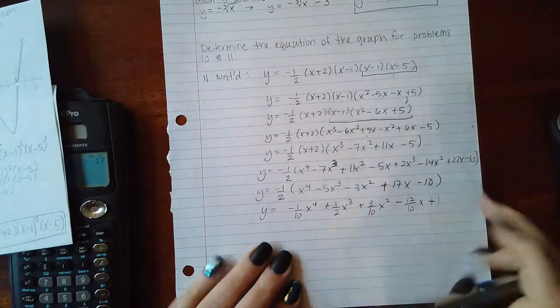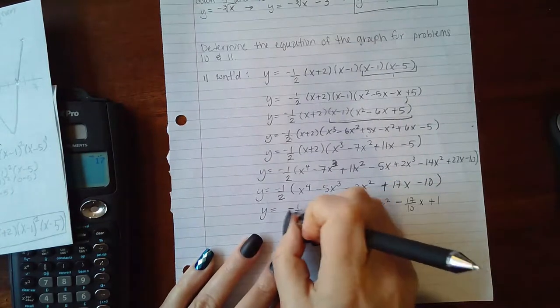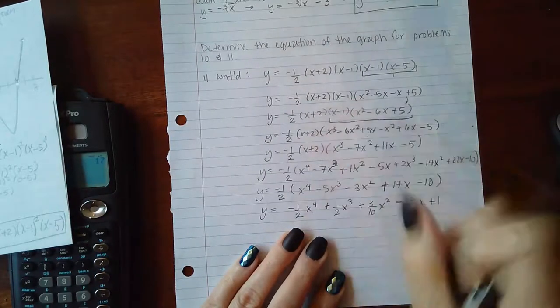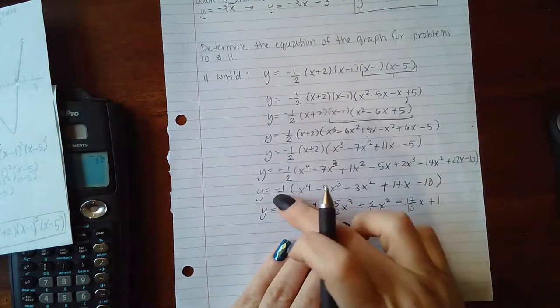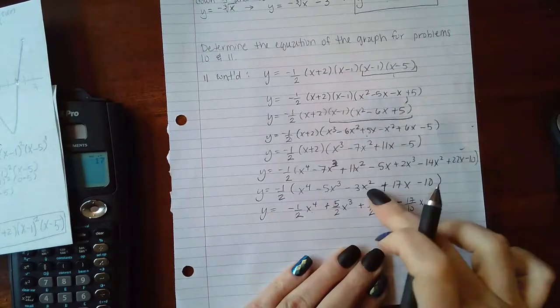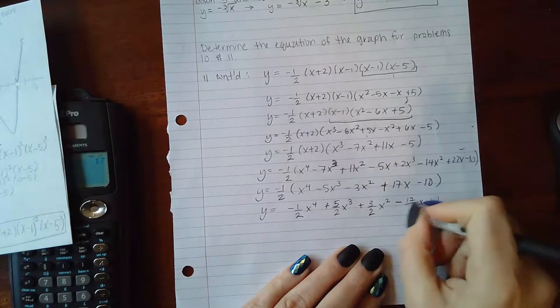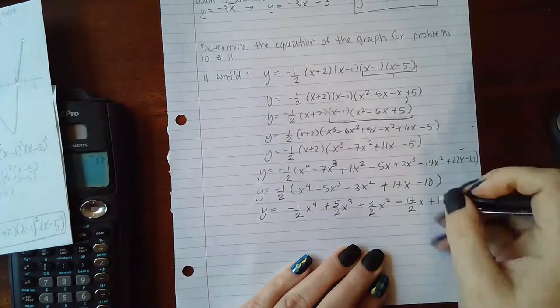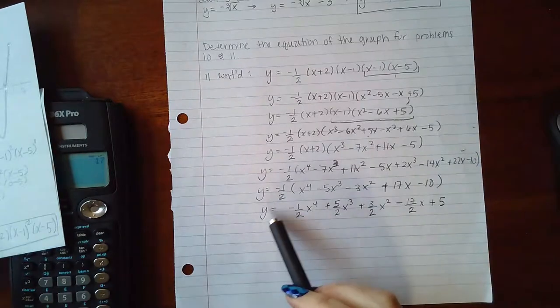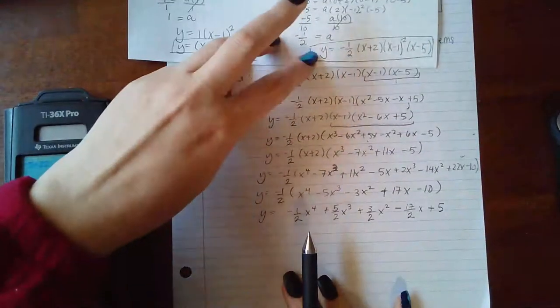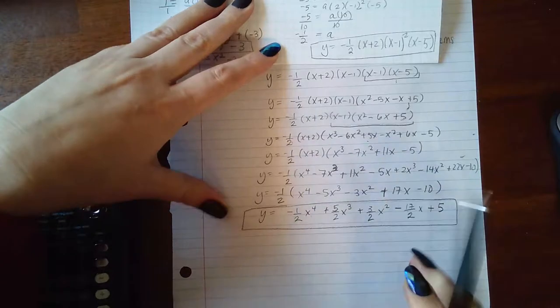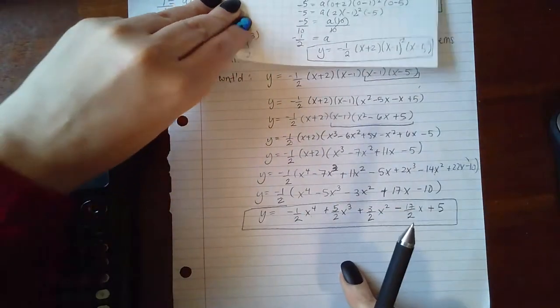When you distribute the 1/2, you actually get negative 1/2 x to the fourth, here you get a positive 5/2 x cubed, 3/2 x squared, here you get negative 17/2 x, and then finally you get positive 5. If you don't see the factored form of the answer in the choices, you may see the expanded form, but at least now you know that you just need to multiply everything out to get that expanded form.